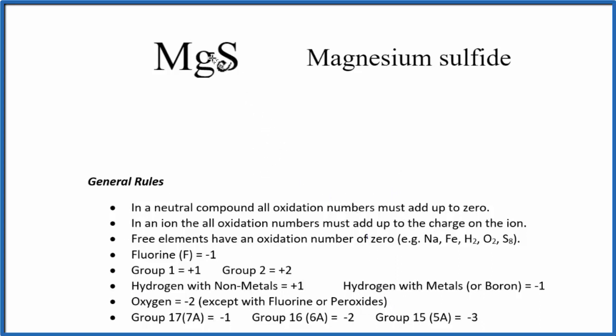First thing to note is that MgS doesn't have a plus or minus like an ion would. This is a neutral compound. Neutral compounds, all the oxidation numbers, they add up to zero. That's going to help us.